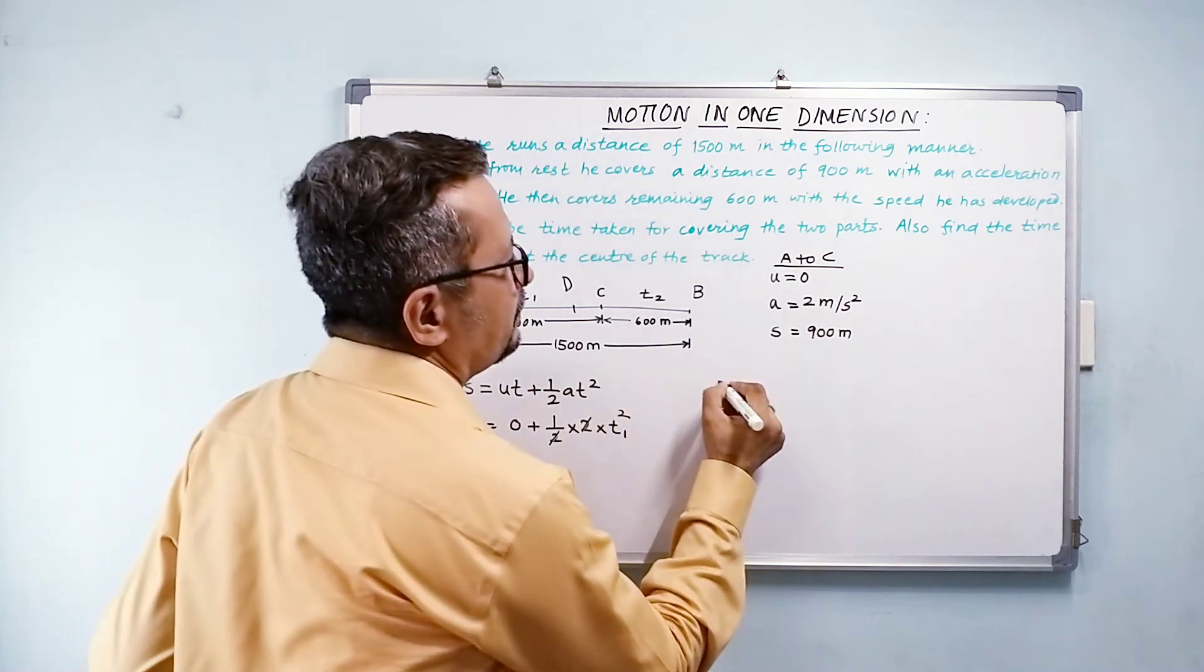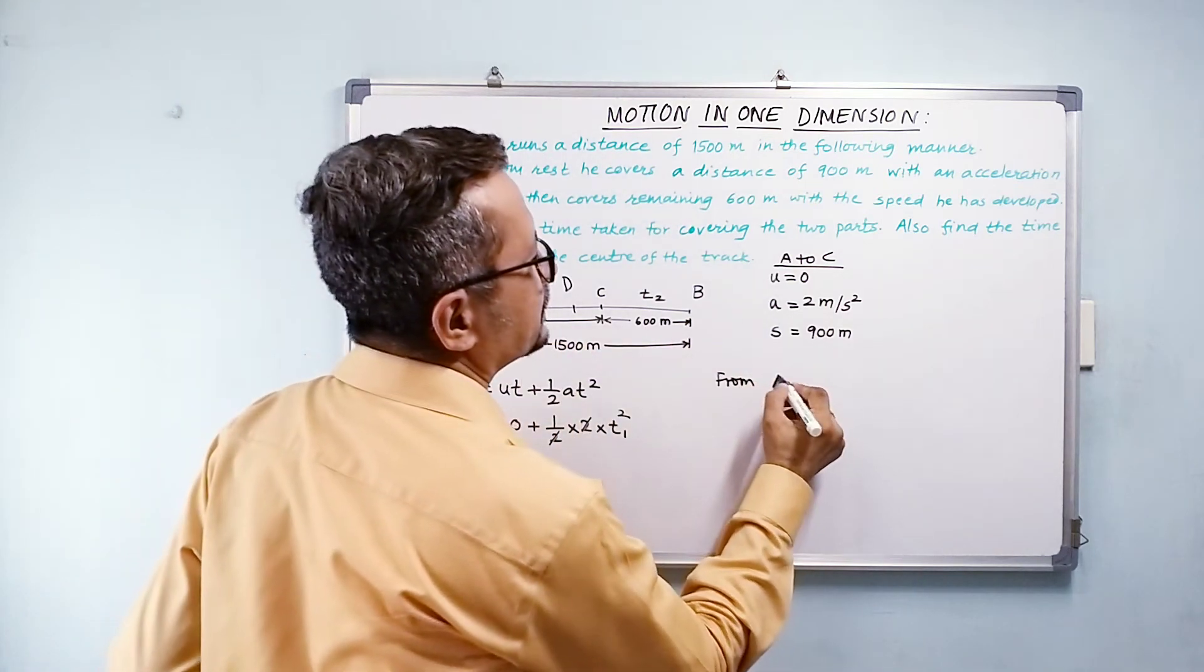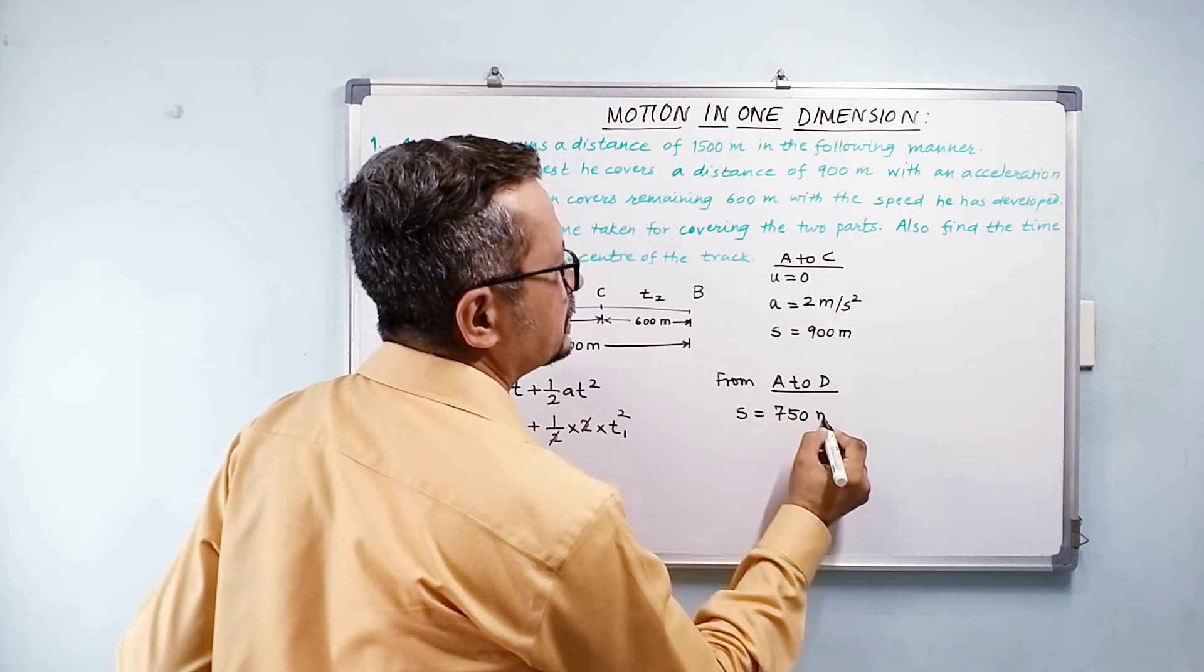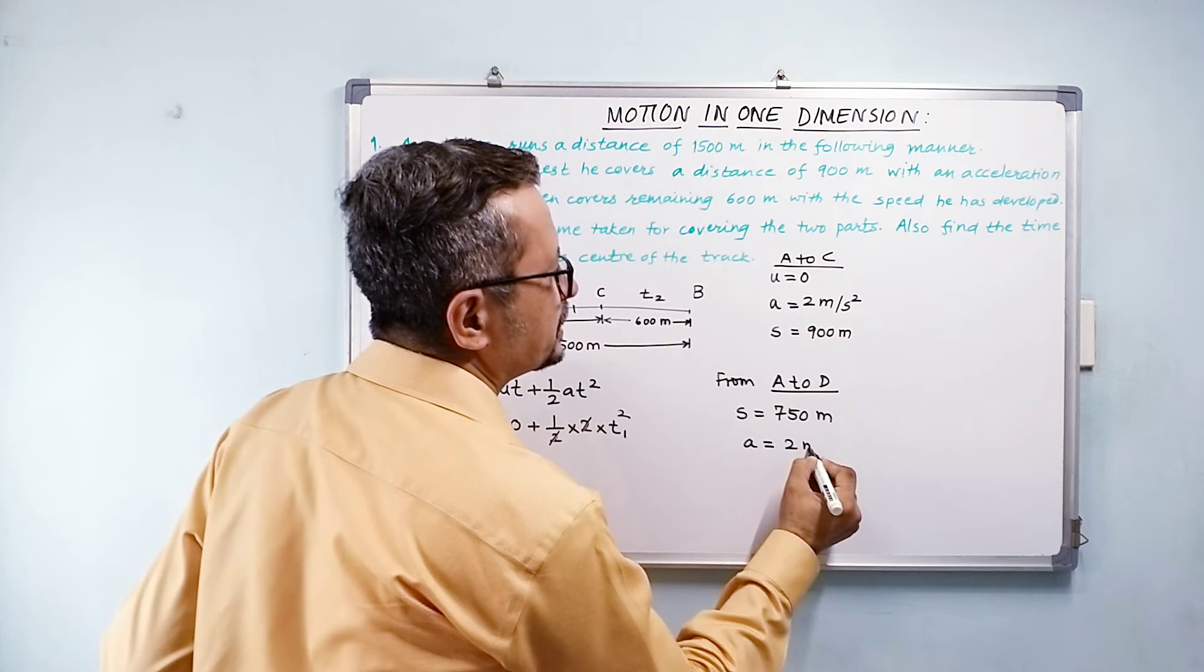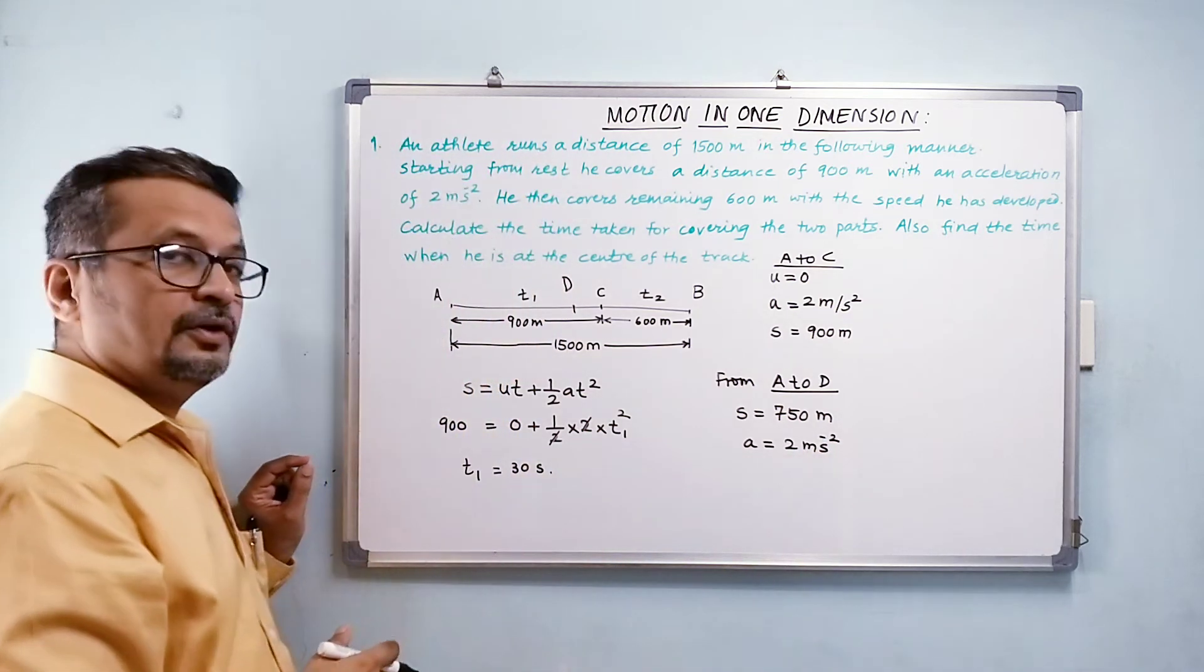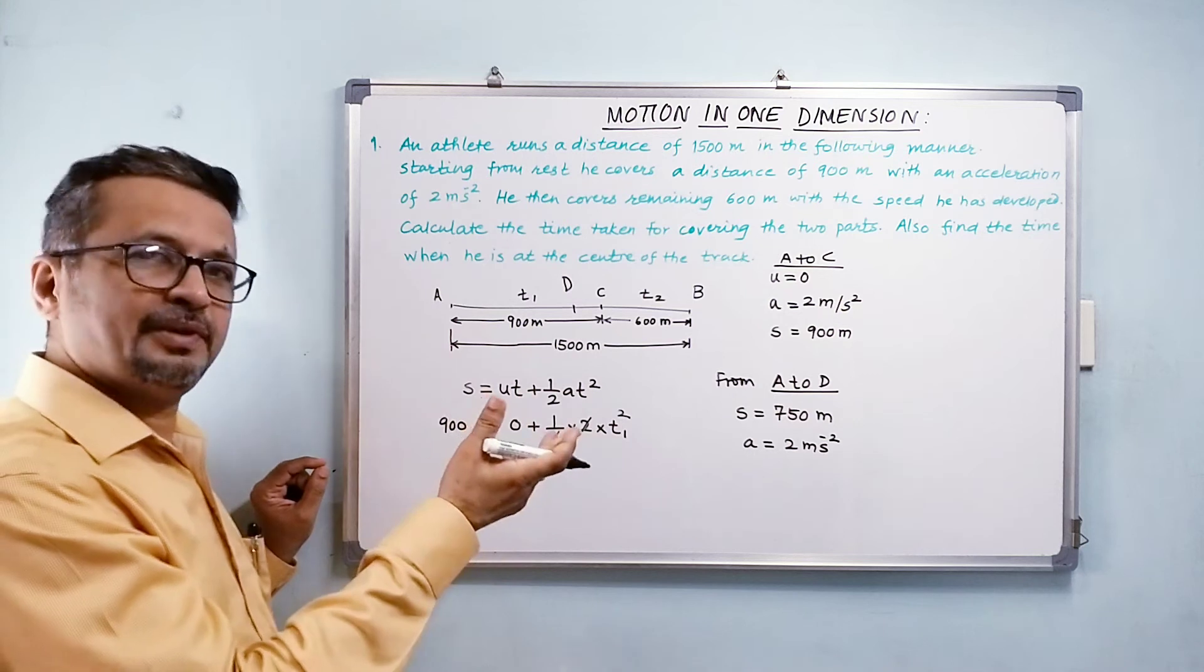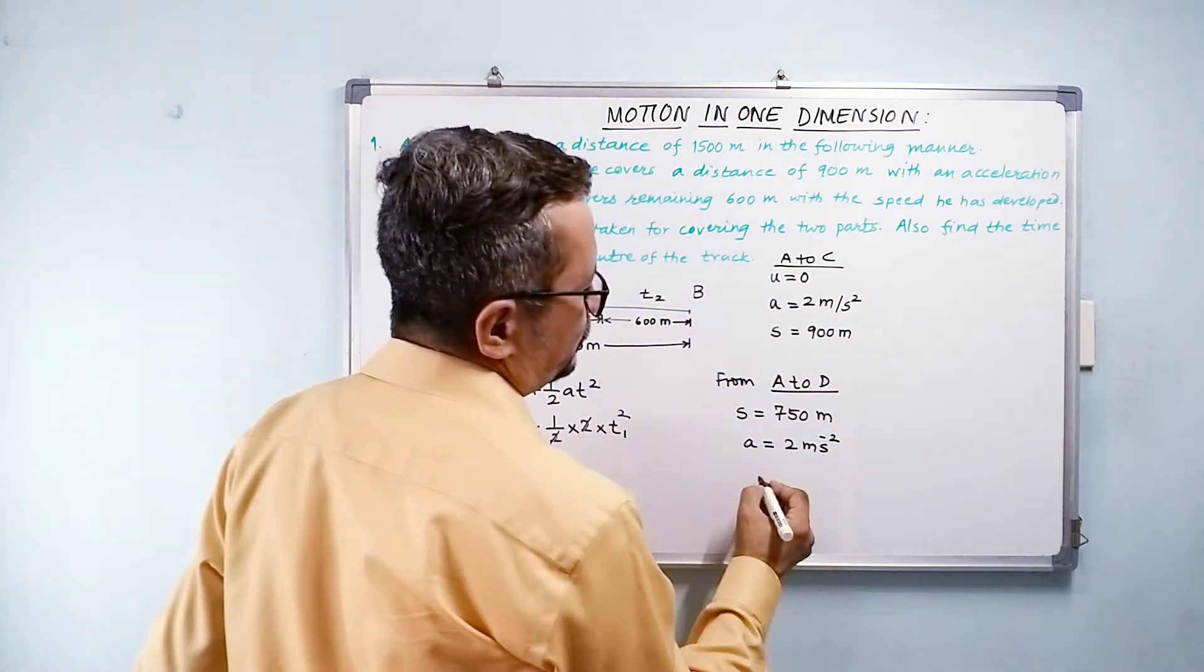Now from A to D, my displacement is 750 meters. I know my acceleration is 2 meters per second squared. For the first 900 meters, my acceleration was 2 meters per second squared. So obviously for 750 meters, my acceleration is going to remain same. And I need to find out the time. So what do I do now?